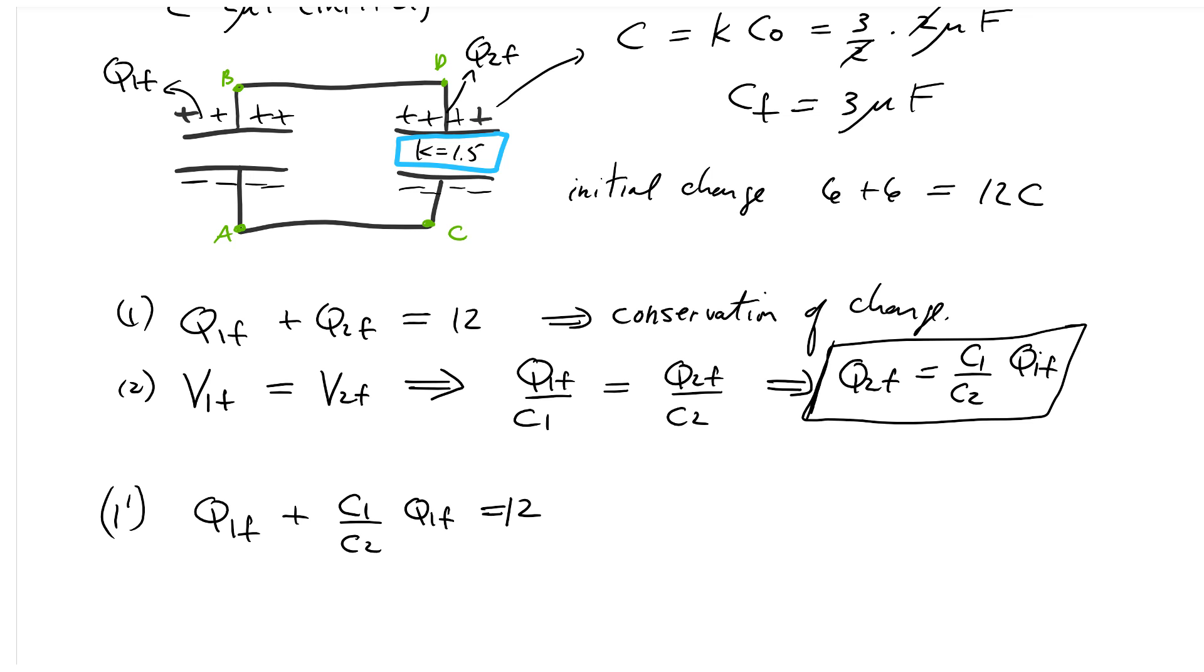Now if you substitute in the values, you'll find you have one equation and the only unknown is Q₁f. So Q₁f simply equals 12 divided by 1 plus C₁ over C₂, where C₁ is the capacitance on the left-hand side and C₂ is the capacitance with the dielectric. We have Q₁ final is 12 over (1 plus 2 microfarads divided by 3 microfarads). The microfarads cancel out, so this will be 5 over 3. Putting everything together, you get 36 over 5 coulombs as the charge on the left-hand side.